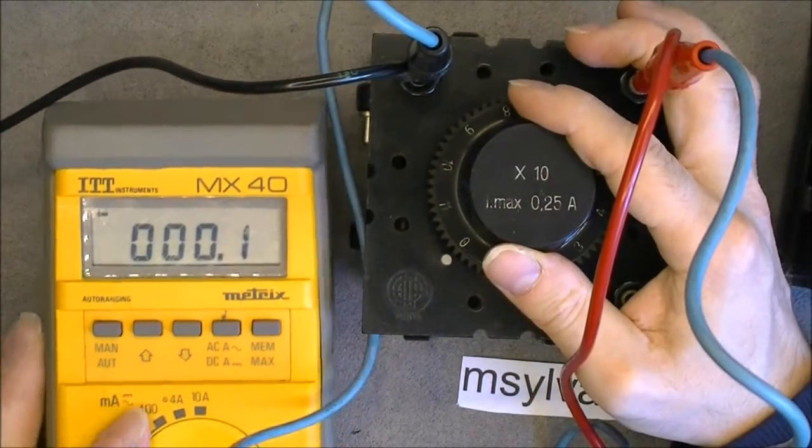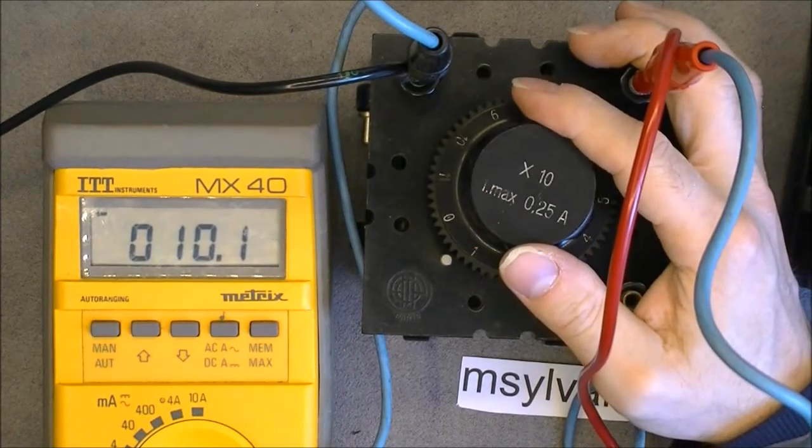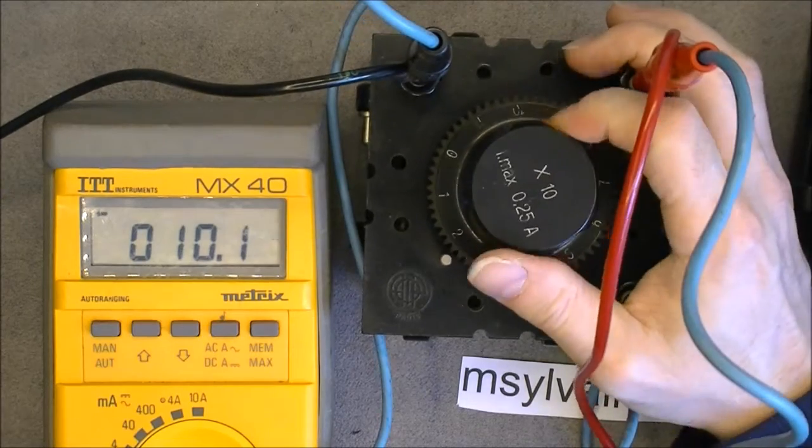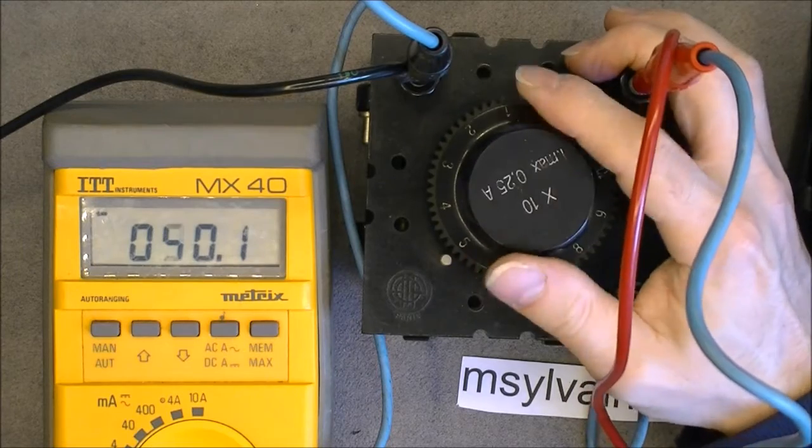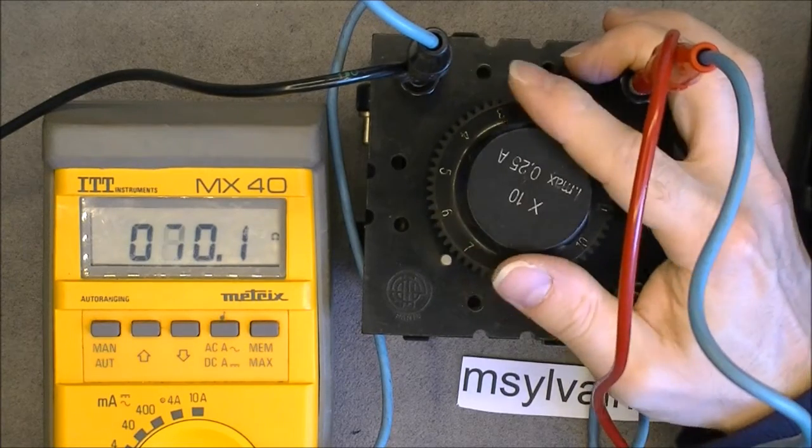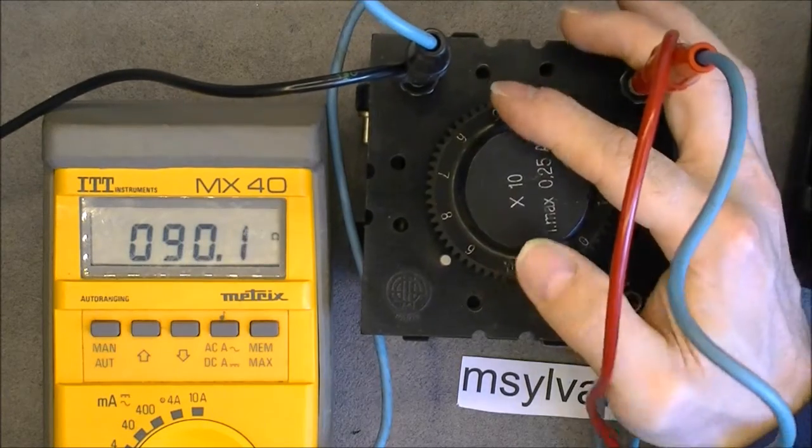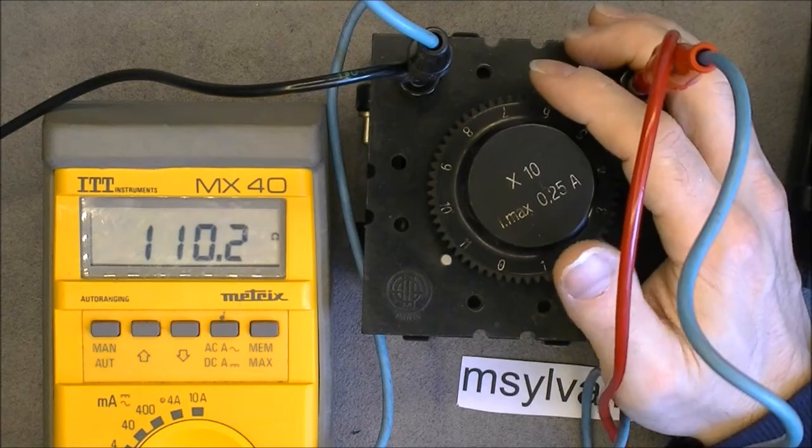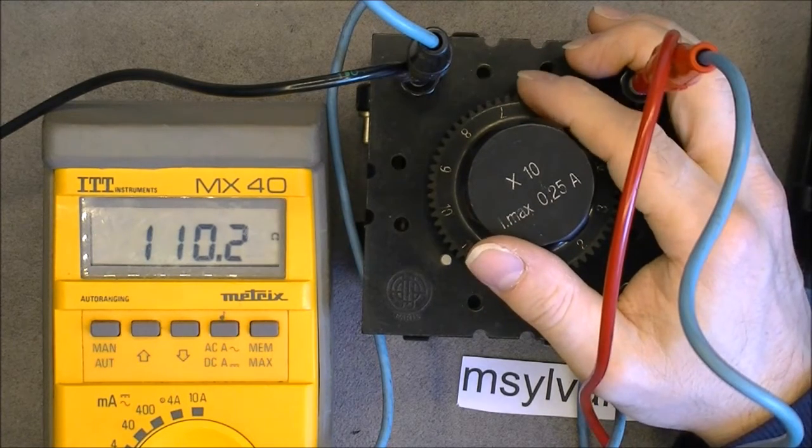So if I turn this slowly enough we get 10 ohms. Then 20. Then 30. So as far as my ohmmeter goes, it seems really good. But it is not a precision instrument by any means. But so far I do not see any problem here.